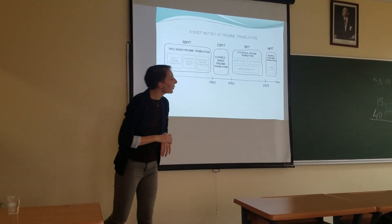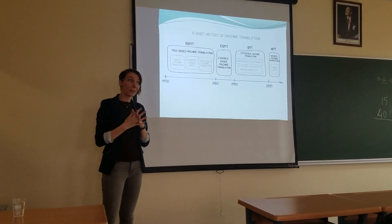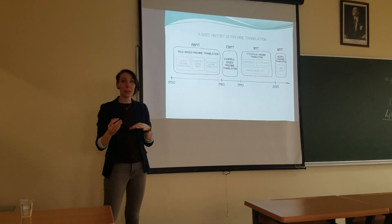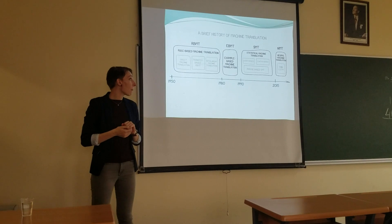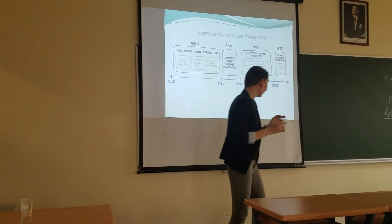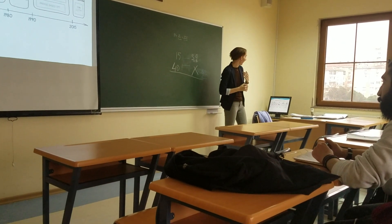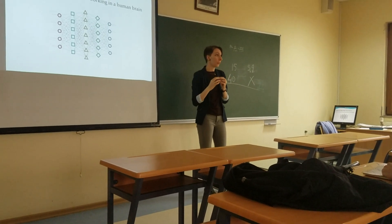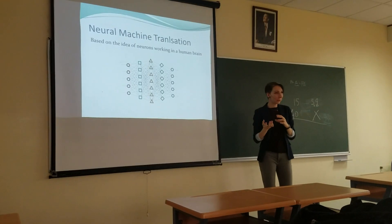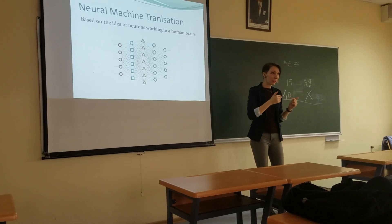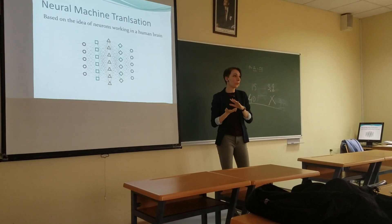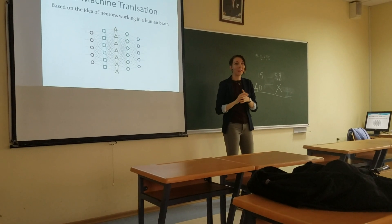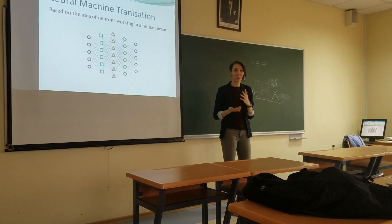Then neural machine translation came to the stage, and things just changed dramatically. This is what we use now — all Google Translate and other translation applications use neural translation. This new technology appeared in 2014–15. It is based on how neurons in the human brain work, which is something very complicated. Neurons can connect to each other and help us learn new things. Somehow the engineers figured out how to do the same thing with translation — neural machine translation is something which learns based on its sources.